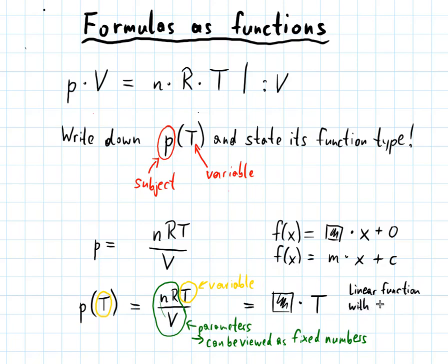with... well, a linear function has a slope. The slope m is, in this case, whatever is in this black box, which was this green bubble. So it was just n r over v. And the c, so the y-intercept, is zero. So this is the answer to the original question. What function type is it? It is a linear function with m equals n times r divided by v and c equals zero.